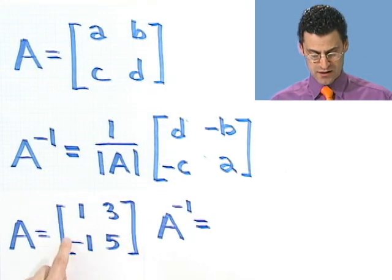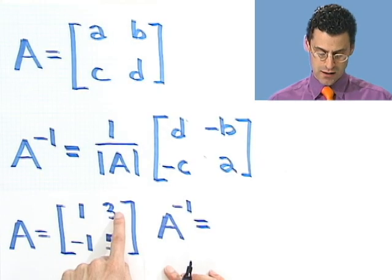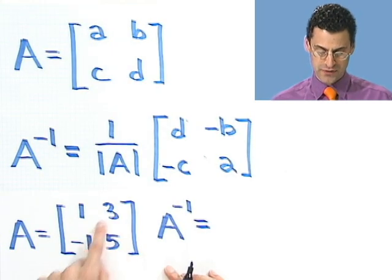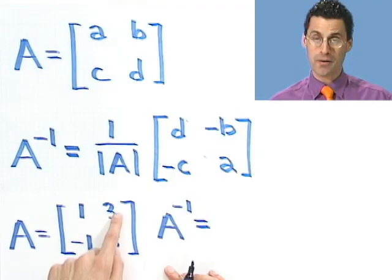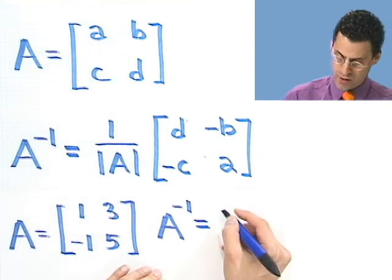Well, first I have to compute the determinant. So I see 1 times 5, which is 5, minus 3 times negative 1. So that's negative 3. So 5 minus negative 3 is actually just 5 plus 3, which is 8. So I take the reciprocal of that. So I write 1 eighth.